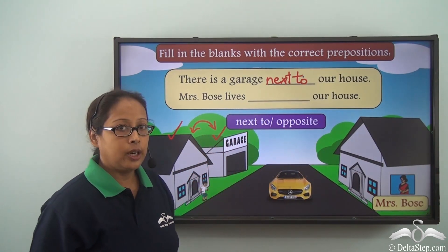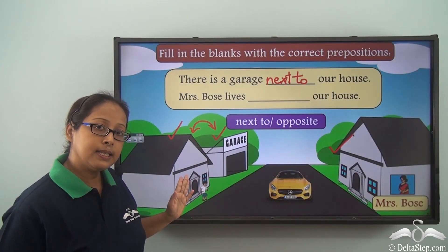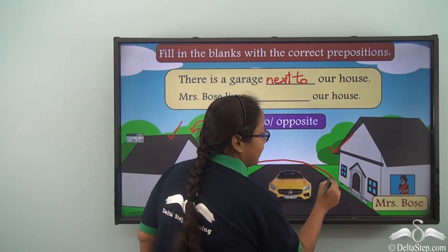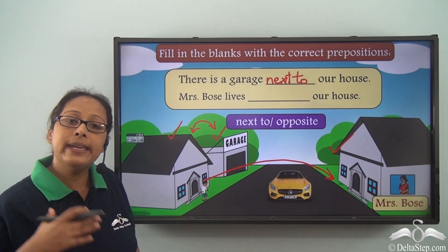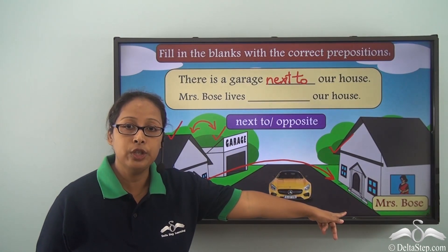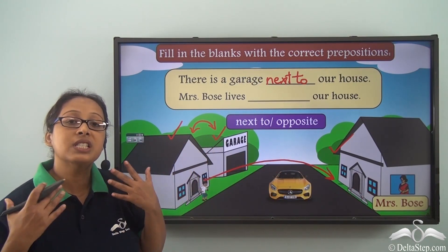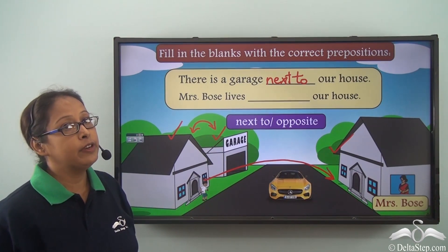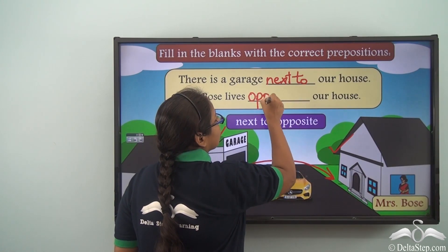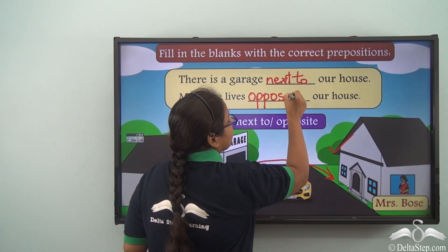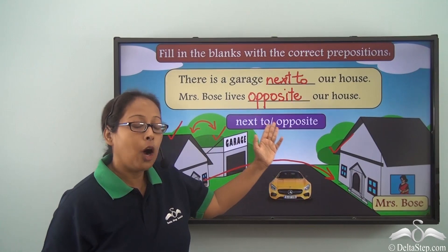Mrs. Bose lives ___ our house. This is Mrs. Bose's house, and if we are standing this side, we can see that it is not on the same side or right beside, so we cannot use next to in this situation. Mrs. Bose's house is on the other side or it is facing this house. So we will use the preposition opposite. Mrs. Bose lives opposite our house.